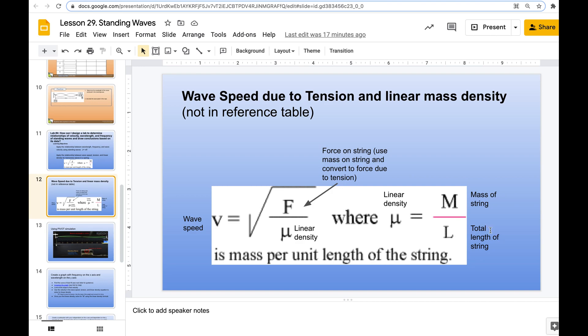And so to break this down further, we have this equation where linear density is mass divided by total length of the string. And when I say total length of the string, I mean the total length of the string, including the vertical part that is hanging.